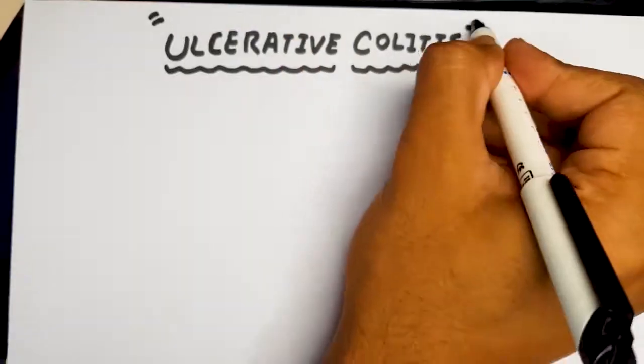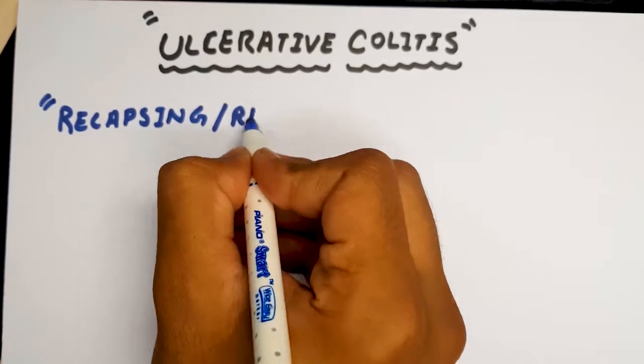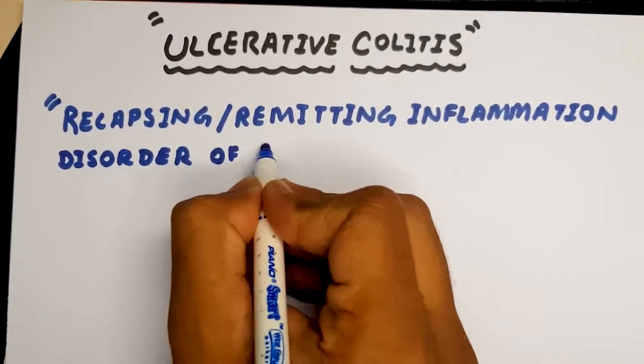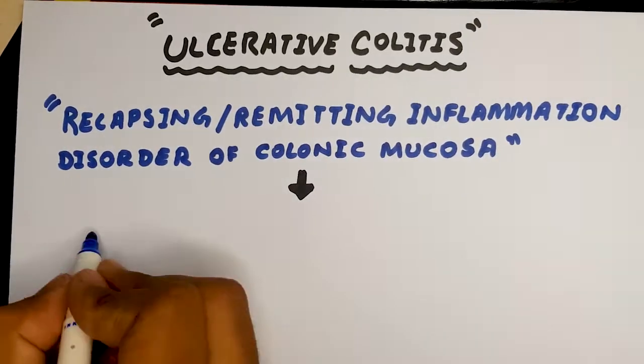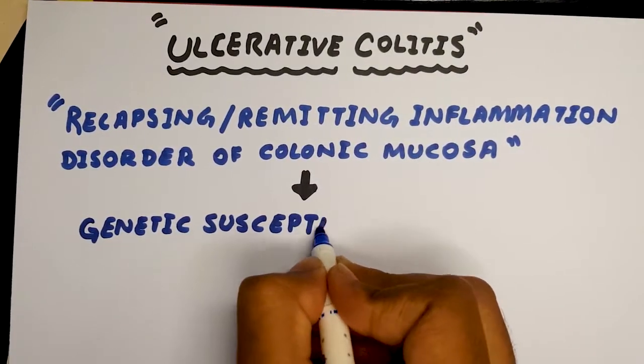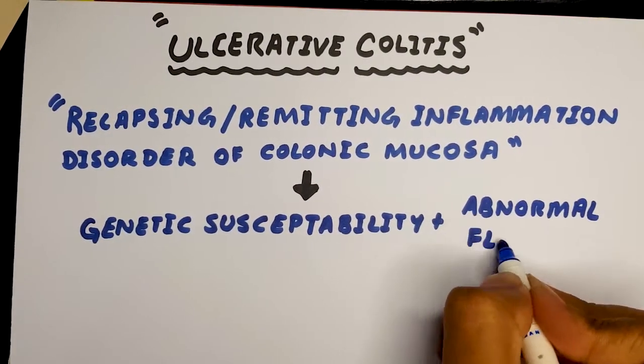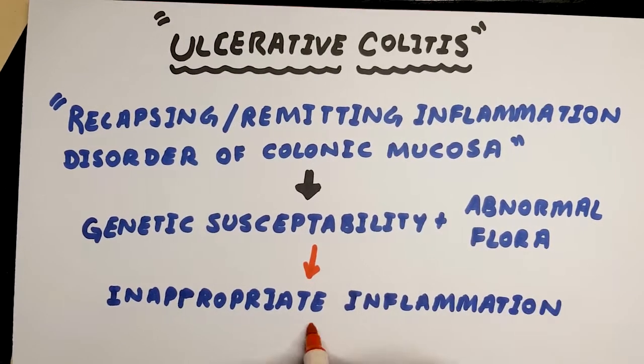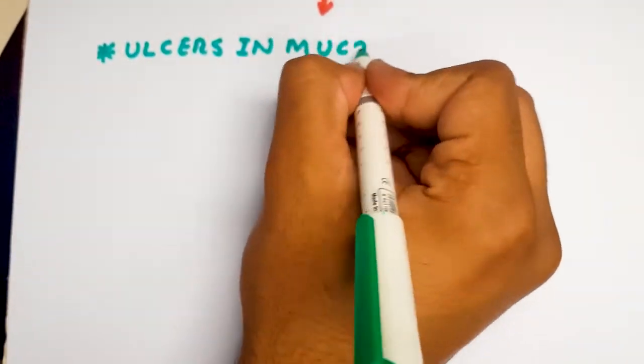Ulcerative colitis is a relapsing and remitting inflammation disorder of the colonic mucosa that results from a combination of genetic susceptibility and abnormal gut flora, which causes inappropriate inflammation. As a result, there are ulcers in the mucosa.